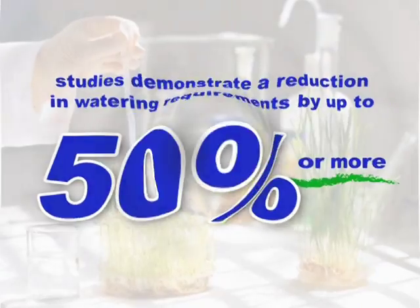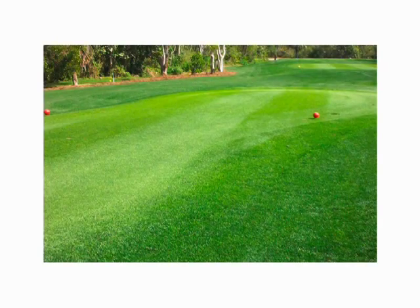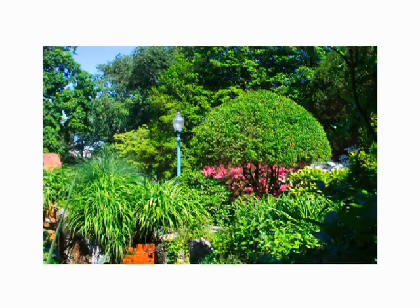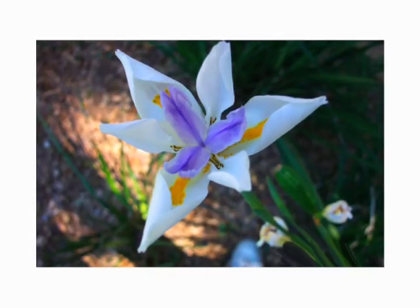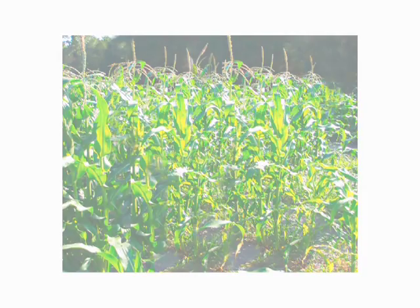Cost-effective enough for large-scale commercial application, Hydrotain possesses a unique combination of economy, effectiveness, and ease of use that will appeal to the professional and homeowner alike, whether treating thousands of acres or just a few. Hydrotain is suitable for turf grass, shrubs, trees, flowers, and even food-producing plants.